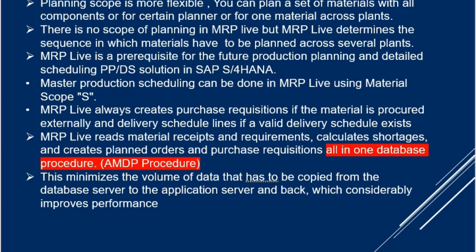How did MRP Live achieve all this? There is a technical architectural change. This is about the AMDP procedure — ABAP Managed Database Procedure. MRP Live reads everything and calculates shortages entirely as a database procedure. Earlier, SAP did this on the application server using ABAP for Classic MRP. Now the whole MRP Live architecture is based on an AMDP procedure, so processing is done at the database layer, considerably reducing data exchange time between the application server and database server — this has greatly improved performance.